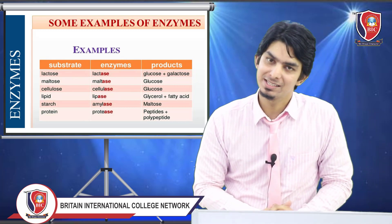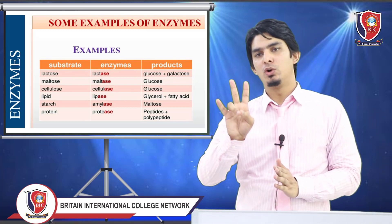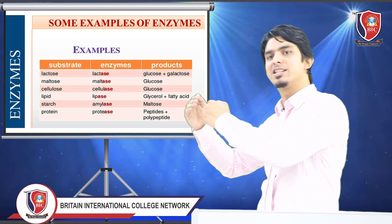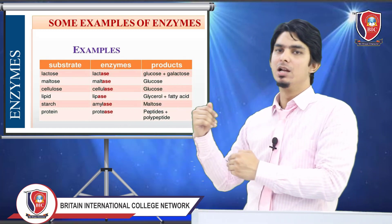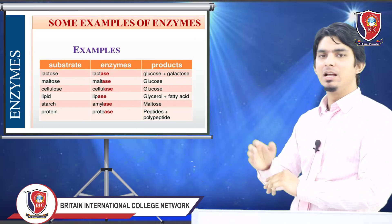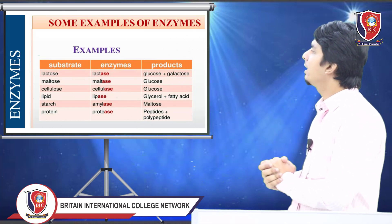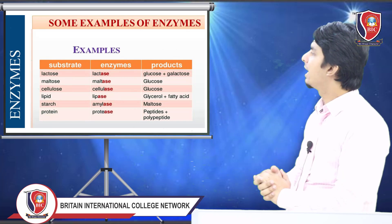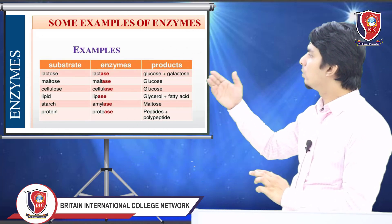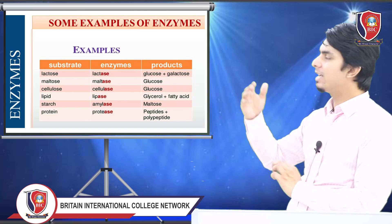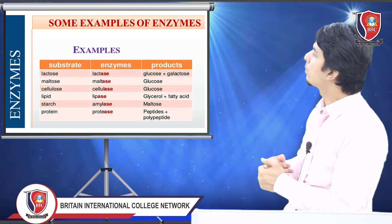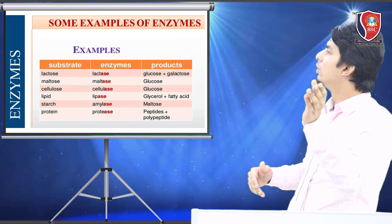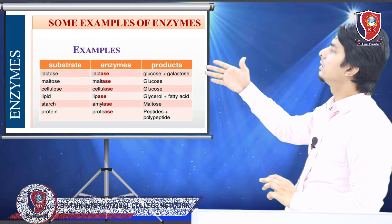Enzyme naming: enzymes are named using two parts. The first part refers to the substrate, and the second part is the suffix '-ase'. For example: lactase acts on lactose, maltase acts on maltose, cellulase acts on cellulose, lipase acts on lipids, amylase acts on starch, and protease acts on proteins. They act on their corresponding substrate and break it down.